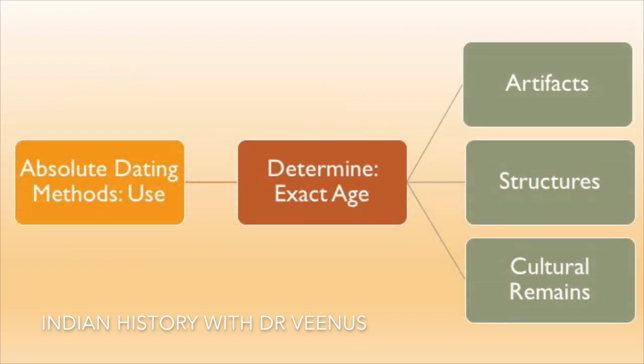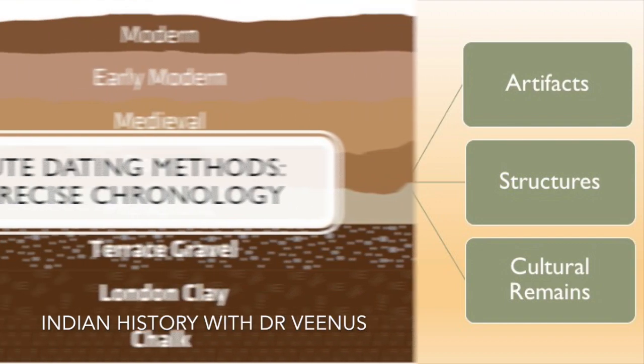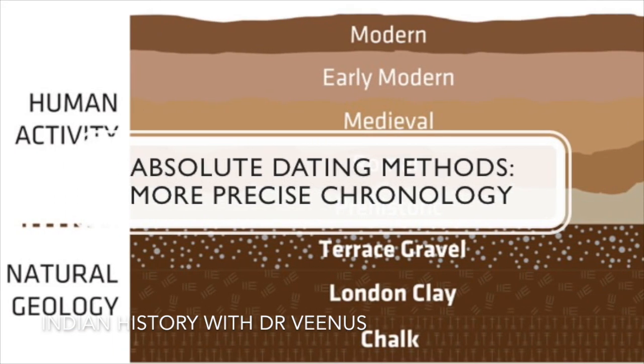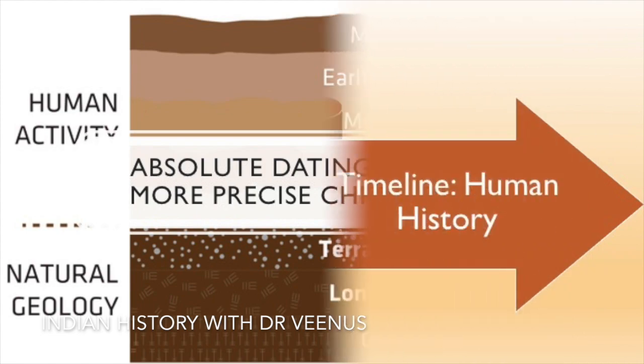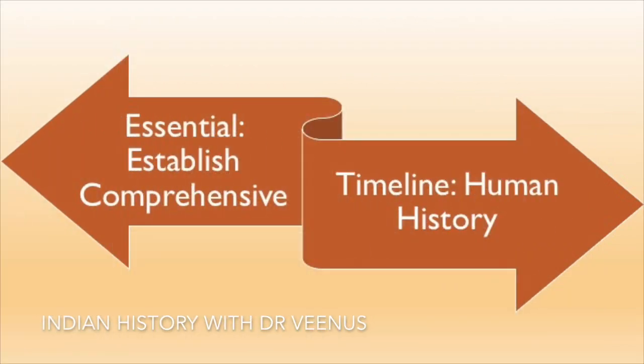Absolute dating methods are used to determine the exact age of artifacts, structures and other cultural remains. These methods provide a more precise chronology than relative dating methods and are essential to establishing a comprehensive timeline of human history.